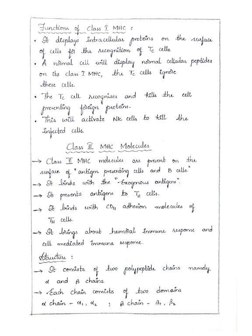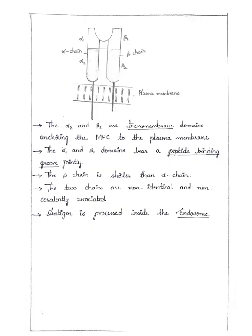Class 2 MHC brings about humoral immune response and cell-mediated immune response. The structure of Class 2 MHC molecule consists of two polypeptide chains: alpha and beta chains. Each chain consists of two domains — the alpha chain with alpha-1 and alpha-2, and the beta chain with beta-1 and beta-2 domains. The alpha-2 and beta-2 are transmembrane domains anchoring the MHC to the plasma membrane. The alpha-1 and beta-1 domains bear a peptide binding groove jointly. The beta chain is shorter than the alpha chain, the two chains are non-identical and non-covalently associated, and the antigen is processed inside the endosome.